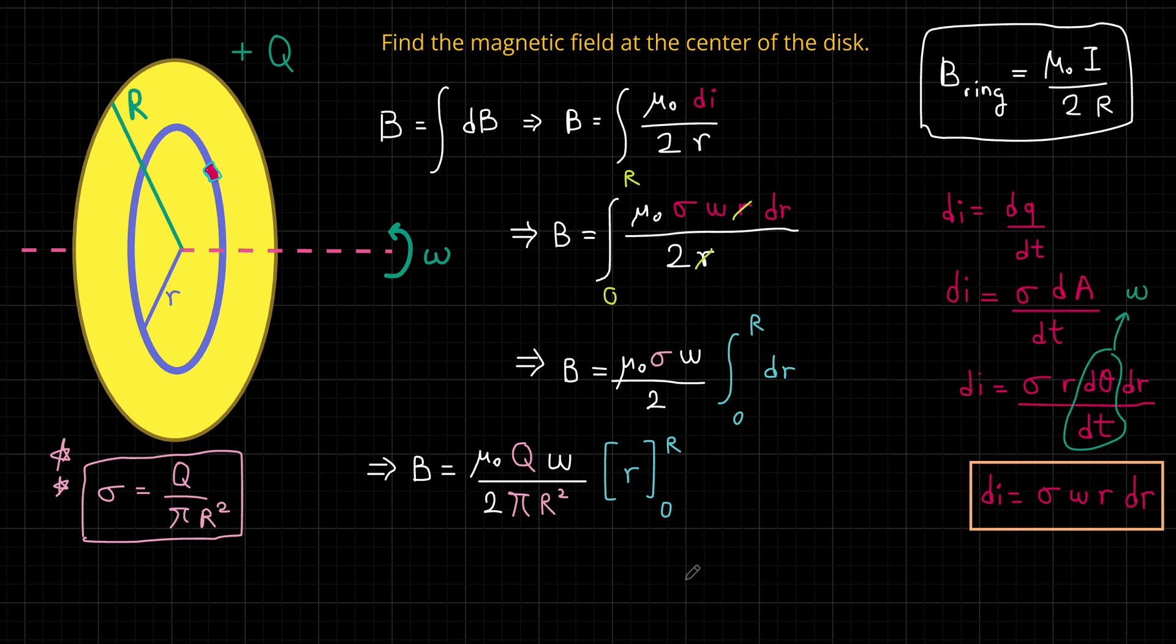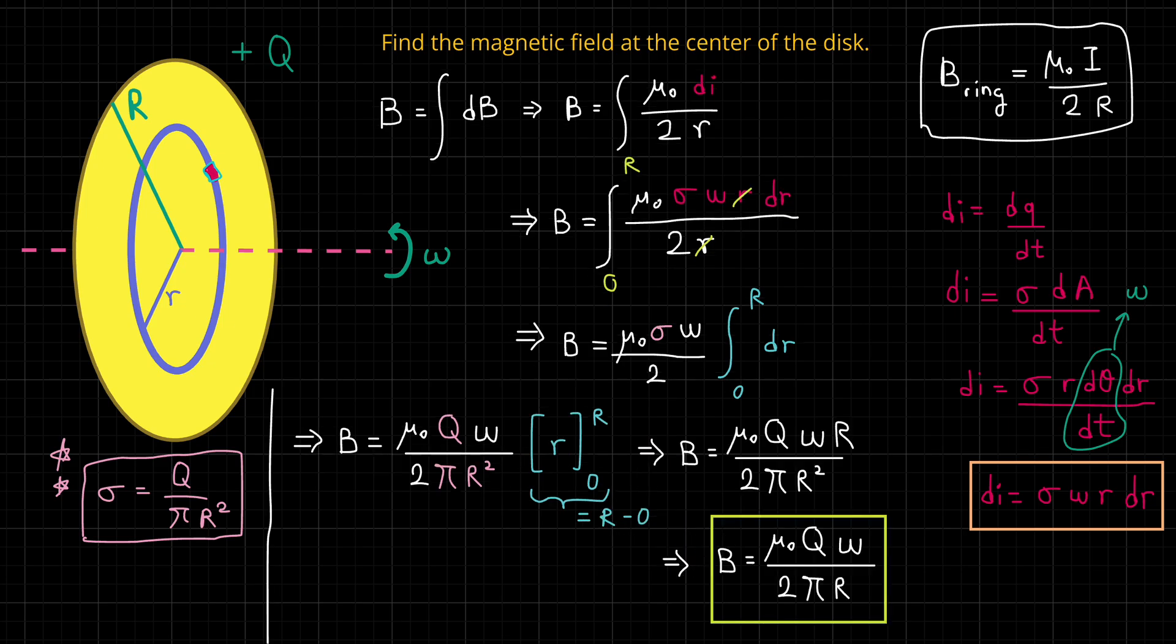Here's what we get. The evaluation of the integral is also fairly simple. We evaluate r from 0 to capital R. So this is simply equal to capital R minus 0, which is just capital R. We get a factor of capital R in the numerator and we have R squared in the denominator. So those simplify. And our final answer is mu zero times capital Q omega divided by 2 pi capital R. That is the magnitude of the magnetic field at the center of the disk.